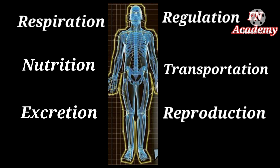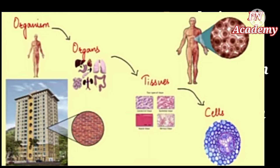Every organism performs various functions during its entire life span, like respiration, nutrition, excretion, regulation, transportation, reproduction, and so on. The body has specific organs to carry out these functions. These organs are made up of various types of tissues, and tissues are nothing but a group of cells.